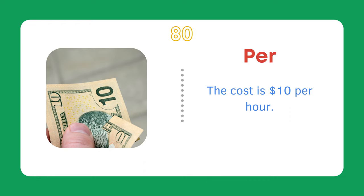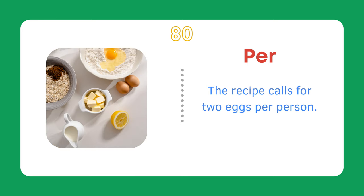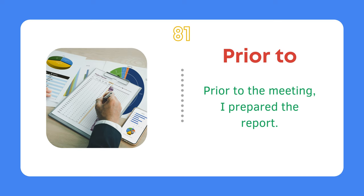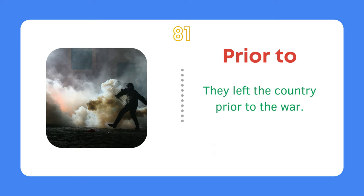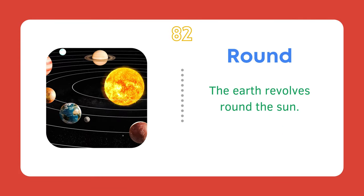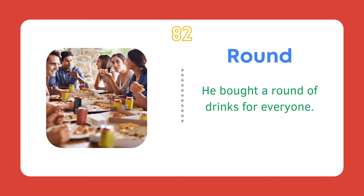Per. The cost is $10 per hour. The recipe calls for two eggs per person. Prior to. Prior to the meeting, I prepared the report. They left the country prior to the war. Round. The earth revolves round the sun. He bought a round of drinks for everyone.